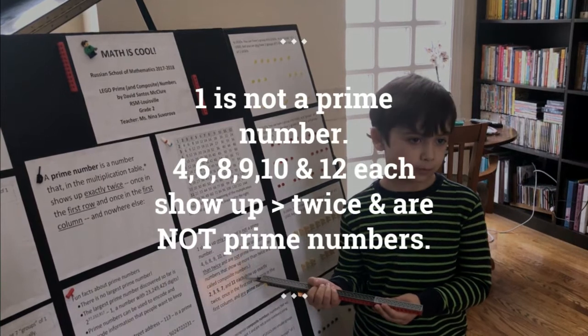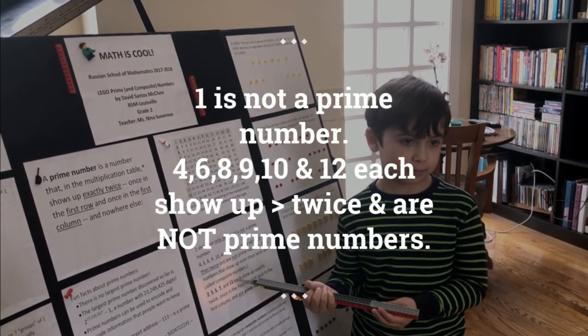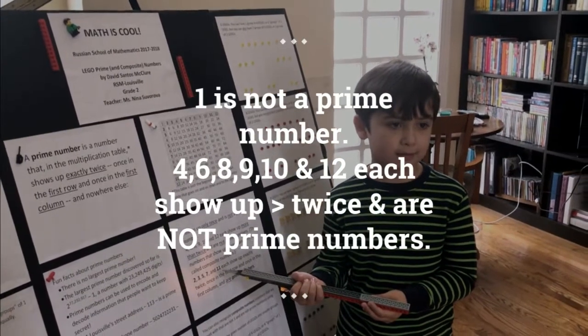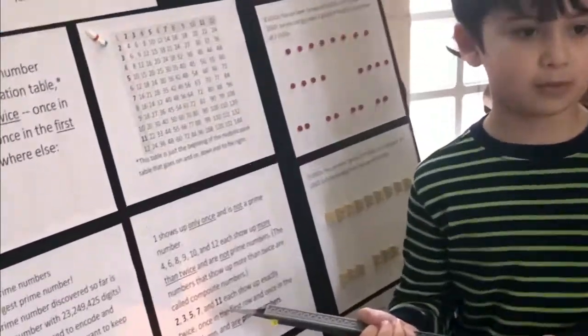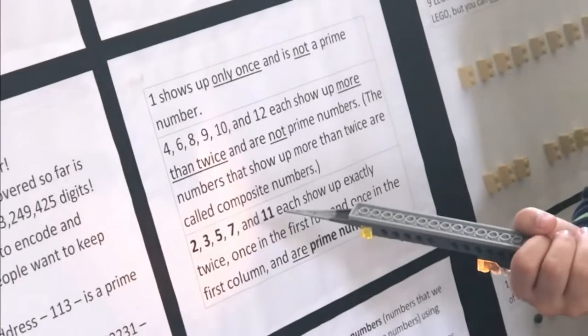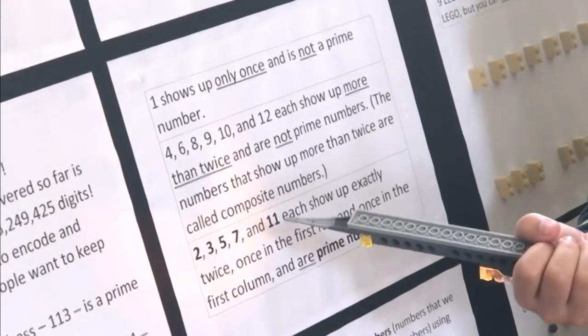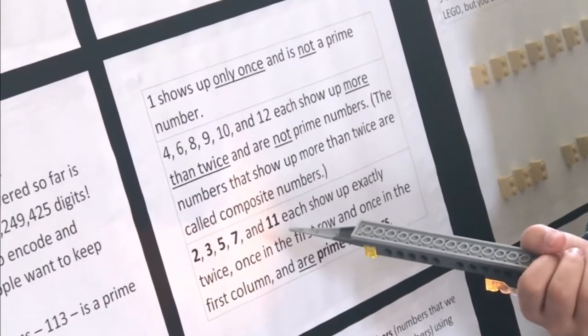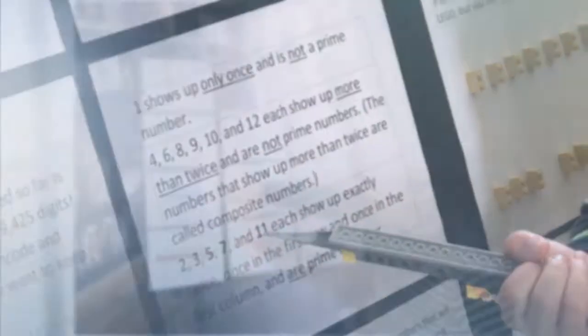One only shows up once and is not a prime number. Four, six, eight, nine, ten, and twelve each show up more than twice and are not prime numbers. The numbers that show up more than twice are called composite numbers.